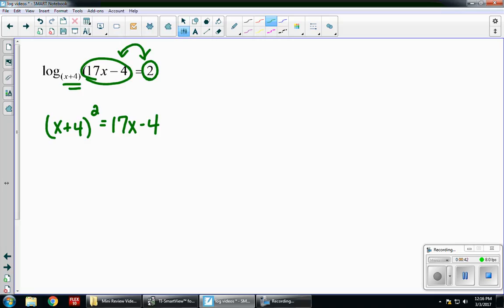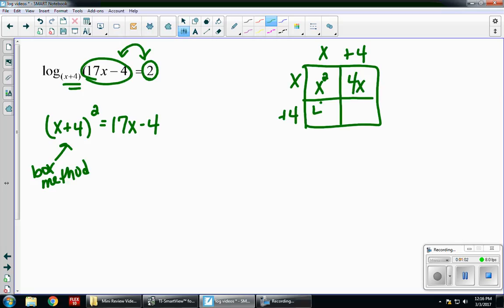And now I have a quadratic equation that we know how to solve. On the left-hand side, I'm going to have to use the box method, or double distribute, whichever you use, or FOIL. So, I'll do a little quick box method on the side over here. x plus 4, x plus 4. x squared, 4x, 4x, and 16.